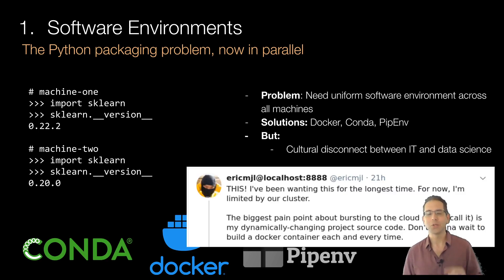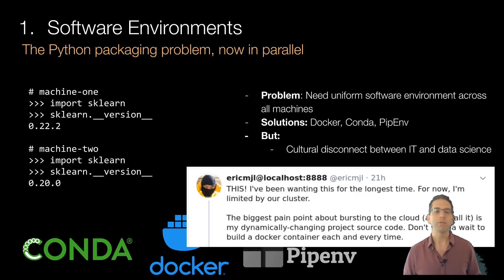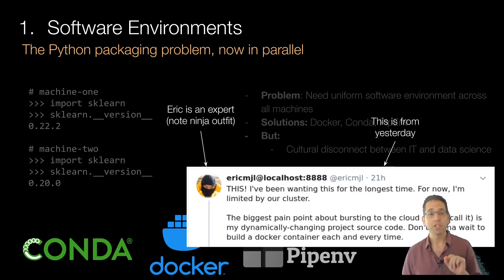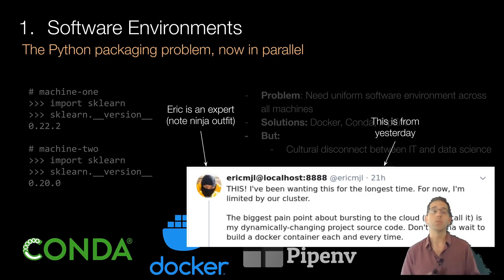To encapsulate this, there's a tweet from Eric Ma — a renowned data scientist, currently at Novartis — where he says the biggest pain point about bursting to the cloud is his dynamically changing project source code: he doesn't want to wait for a Docker container each and every time. This is a really common request. And notably, this tweet happened yesterday — this kind of thing happens all the time. Eric is actually very senior; this isn't a problem with training or telling him Docker exists. He knows Docker exists. But there's this sort of mismatch between IT and data science that's really common when you start scaling data science on institutional hardware.